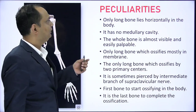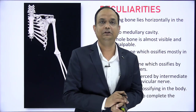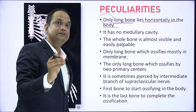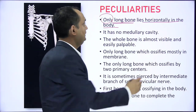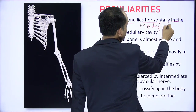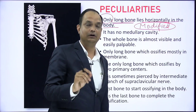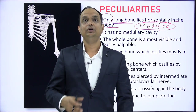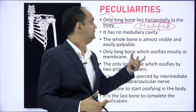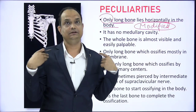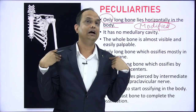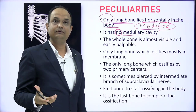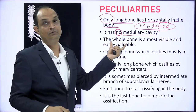Now the peculiarities of the clavicle — commonly asked in your viva. First, it is the only long bone that lies horizontally in the body, so it is considered a modified long bone. All other long bones like the humerus, femur, and tibia lie vertically, but the clavicle is horizontally placed, so it does not follow the usual criteria of a long bone. Second, it does not have a medullary cavity, which is again a characteristic feature of long bones that is absent here.